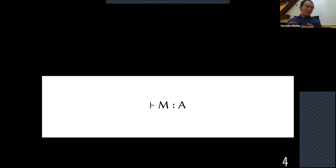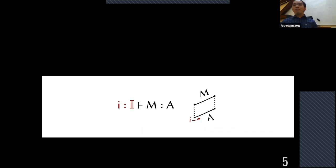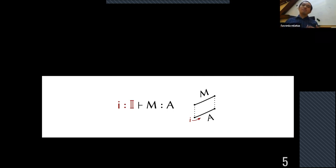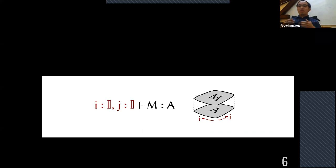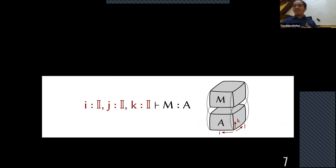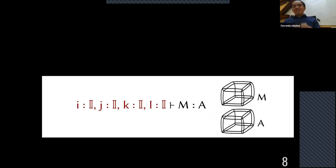Here is a very innocent-looking judgment: M is of type A. The first important idea of cubical type theory is to introduce a formal interval. If you put a formal interval in the context, then M and A are lines — M is a line over a type A which is also a line. You can put more than one dimension variable: two gives a square, three gives a cube, four gives a four-cube.